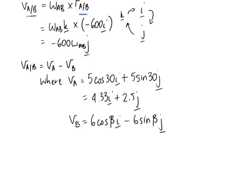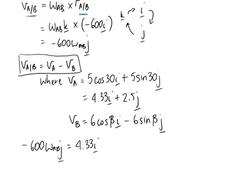So now that we've put these both into their vector forms, let's go back and fill in this equation. So we know that the relative term is equal to negative 600 omega abj, it's equal to Va, which is 4.33i plus 2.5j, minus Vb. So we're going to flip the signs of what's in here. So now it just becomes a case of needing to solve for the unknowns.